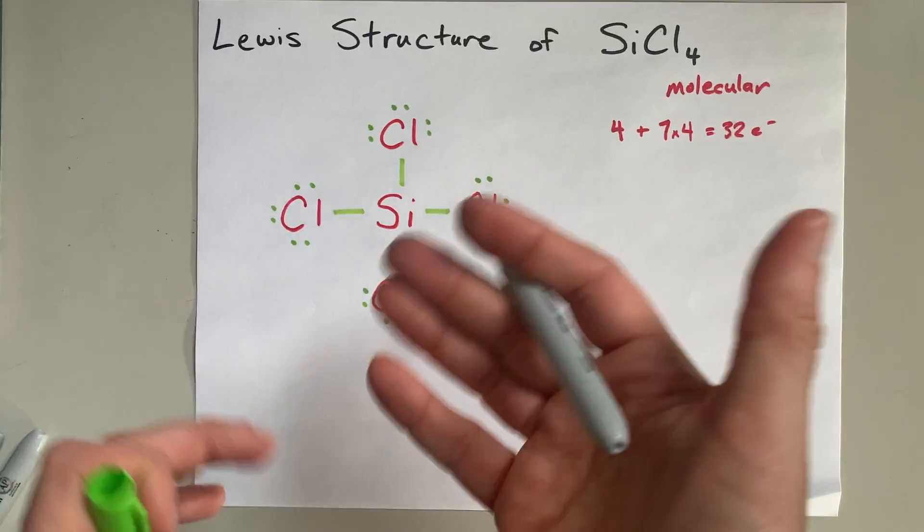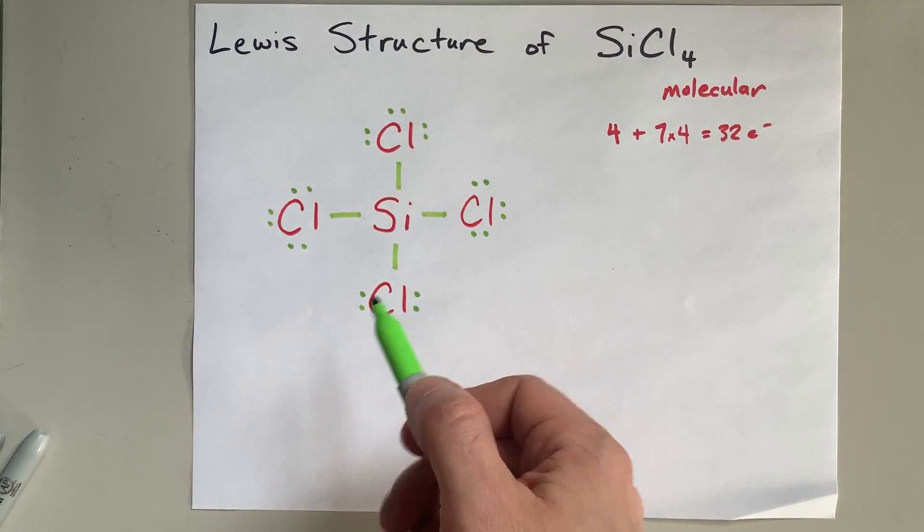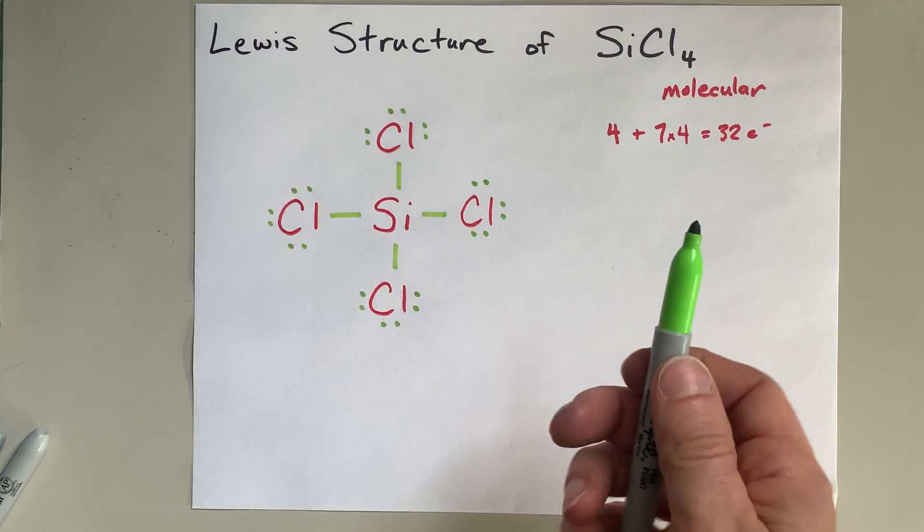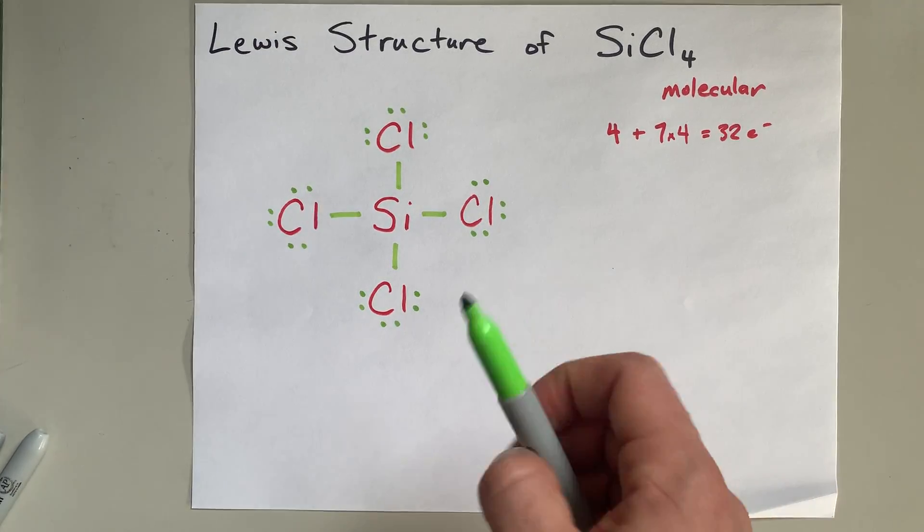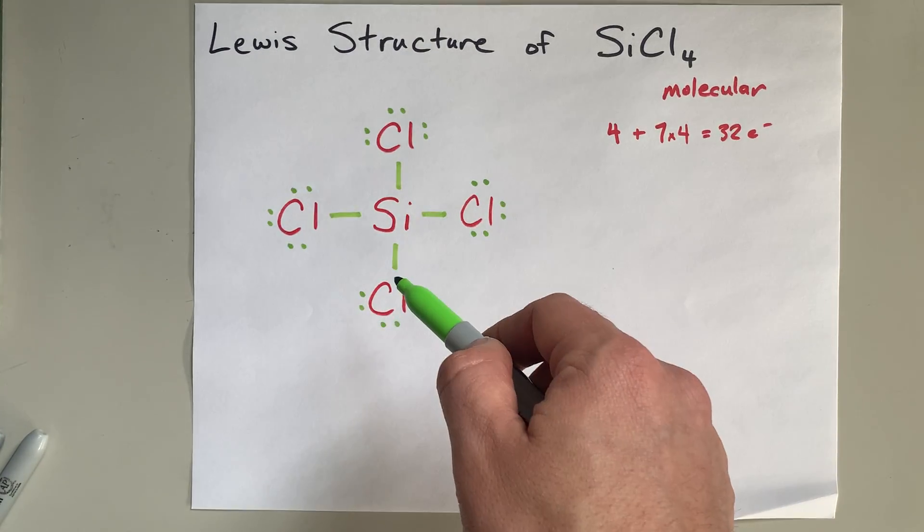I've got to stop there. But luckily for me, I've got a complete octet on each of these chlorine atoms. They are happy and stable. If I had extra electrons, I would dump them on the center atom, but I don't, so I won't.